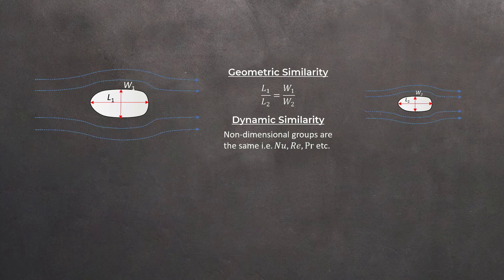For the case of forced convection, two geometrically similar systems are dynamically similar if their Nusselt, Reynolds, and Prandtl numbers are the same.